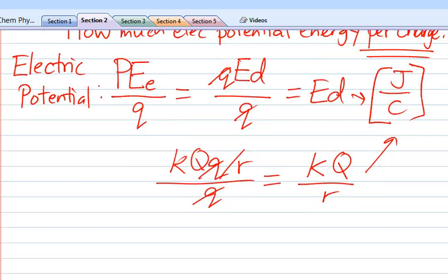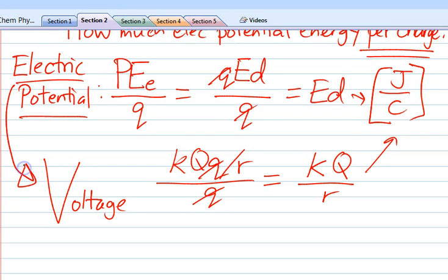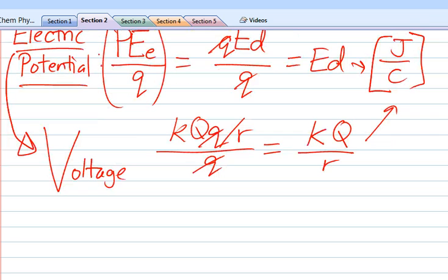And the thing is, this is kind of weird to keep calling it electric potential. So there's a different term for this, and that is V, voltage. So when you hear about a voltage, it's really an electric potential. And what it is is telling you how much electric potential energy there is per unit charge.